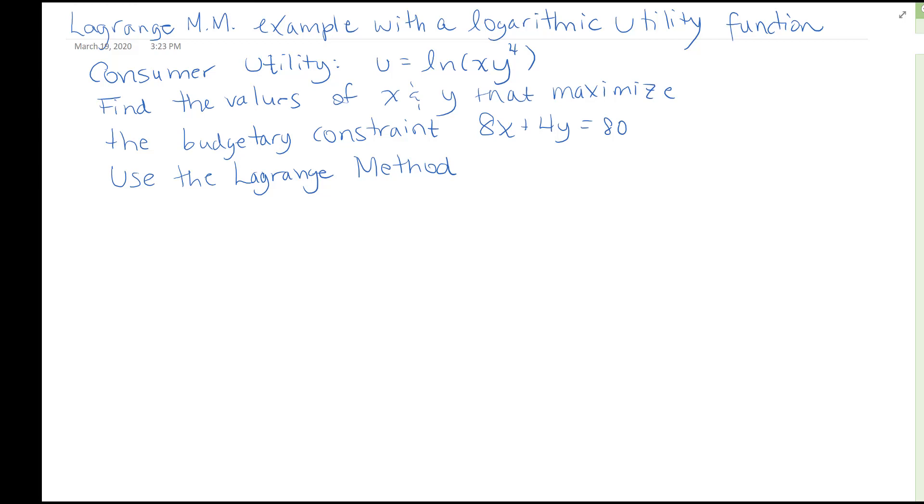In this example I'm going to go through a Lagrange multiplier method problem with a logarithmic utility function. So our utility function is the natural logarithm of xy to the power 4, and we have a budgetary constraint we need to satisfy which is 8x plus 4y equals 80, and we're going to use that Lagrange multiplier method to solve this problem.